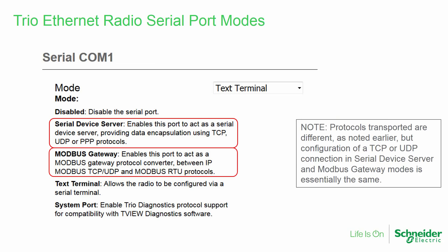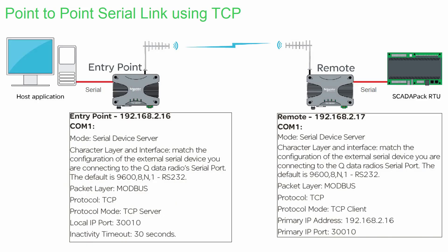As noted earlier, the protocols transported by Serial Device Server and Modbus Gateway modes are different. However, configuration of a TCP or UDP connection is essentially the same, so the following examples will not show both. The next few slides will show actual wireless networks and discuss the key configuration items required for each example in both the entry point and remote radios. It is assumed that a working radio system has first been established. First, we will examine one method of creating a point-to-point Serial In, Serial Out link, which uses the TCP transport layer. In both radios, the mode has been set to Serial Device Server, allowing for transport of any serial protocol, not just Modbus.